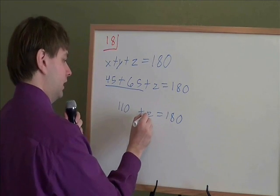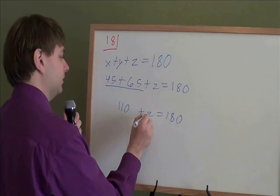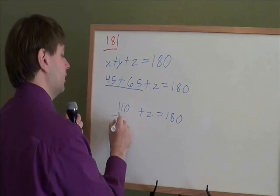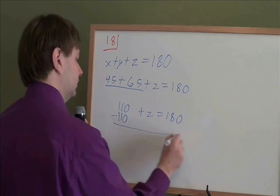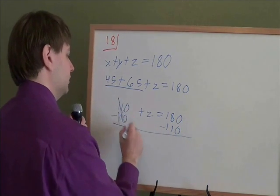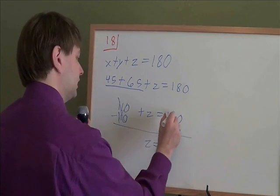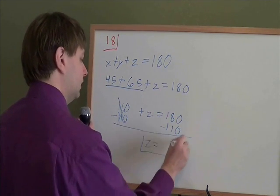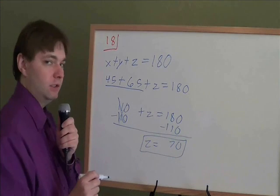And we need to get the third angle, that C, by itself. To do that, you need to get rid of a 110. To get rid of a positive 110, you do the opposite of it. You subtract it. Those cancel. And subtracting this gives you 70. The third angle is 70 degrees.